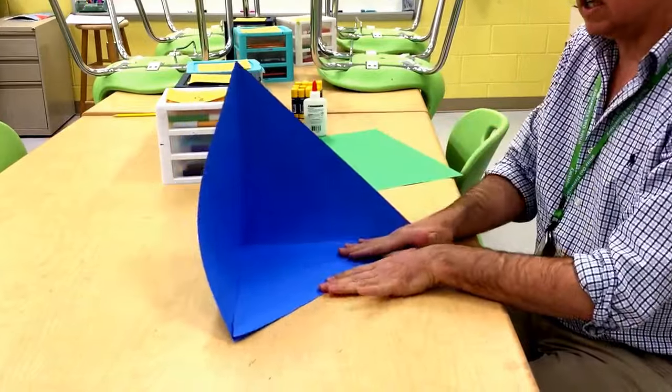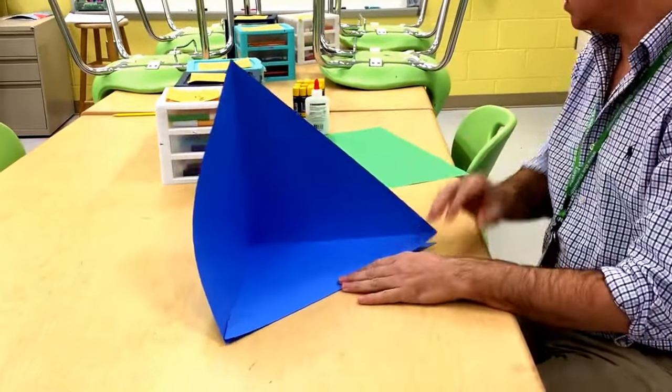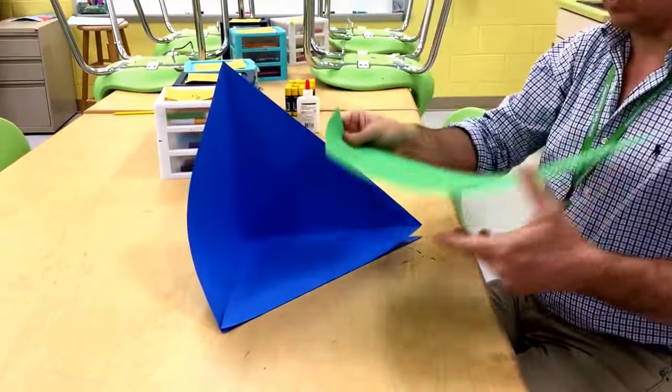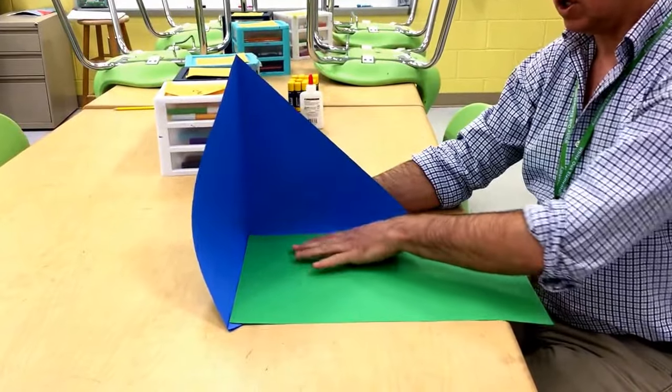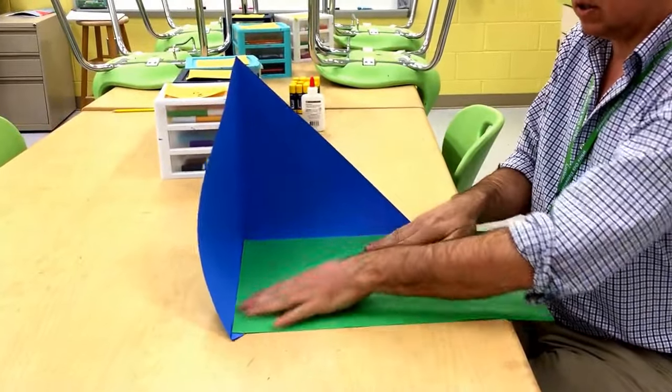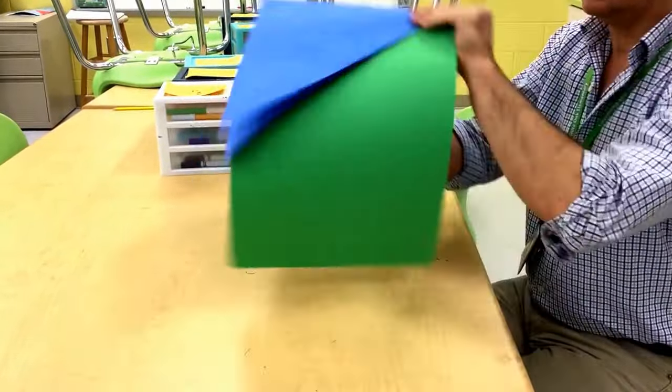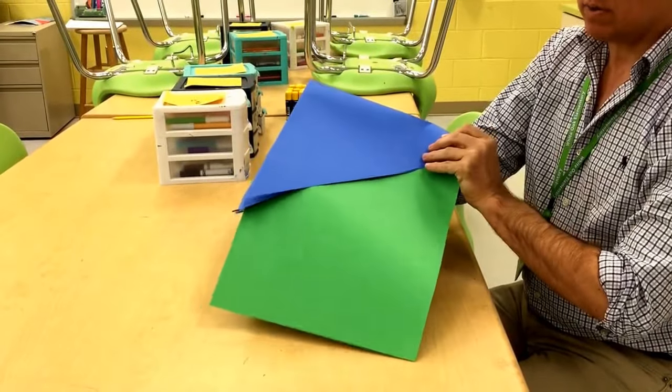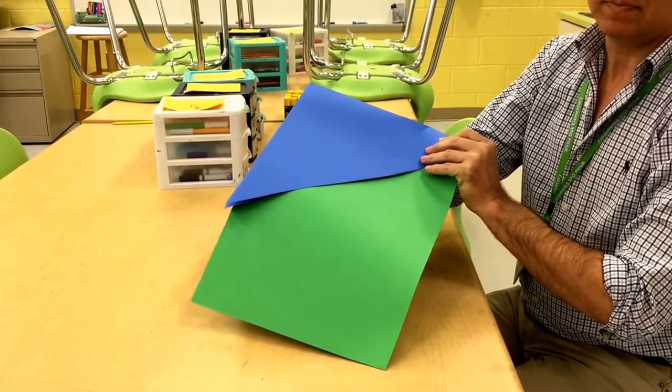The trick for doing the ground or the grass is to get a whole sheet and put it in the corner. Glue it down and then after you glue it, you can trim it off straight at the back. That's it.